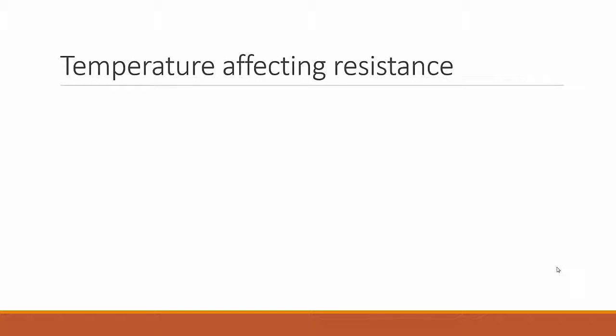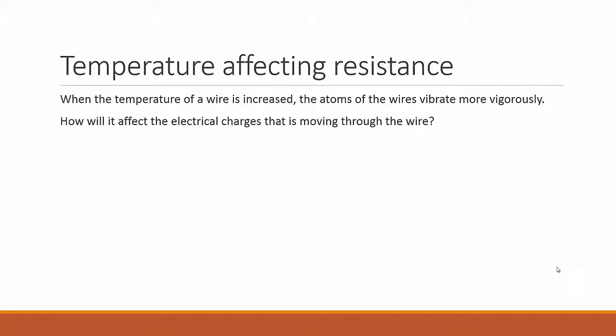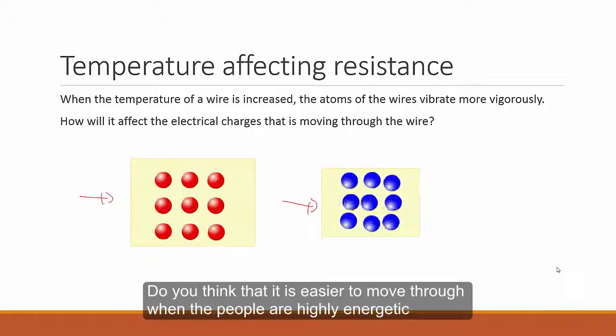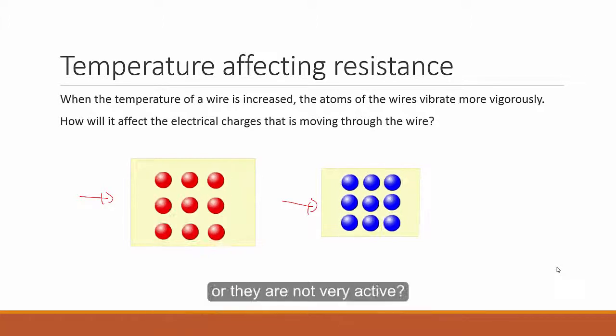And how do you visualize this? When the temperature of wire is increased, the atoms of the wire vibrate more vigorously. But how would this affect the electrical charges that are trying to move through the wire? This is a wire that is obviously hot, and this wire that is of a lower temperature. Imagine that you're trying to move through a room of people. Do you think that it is easier to move through when the people are highly energetic, which is hot, or they are not very active, which is cold? And there you have your answer.